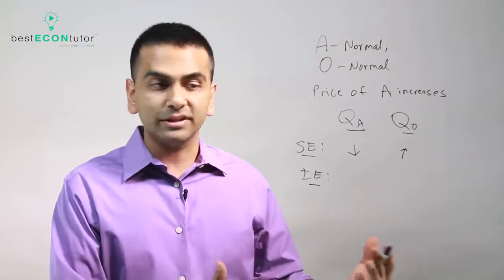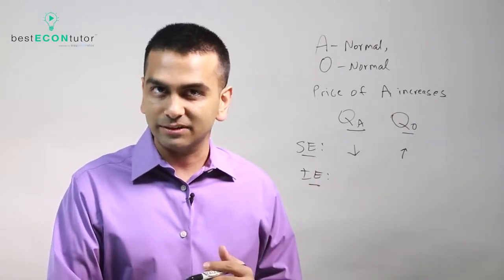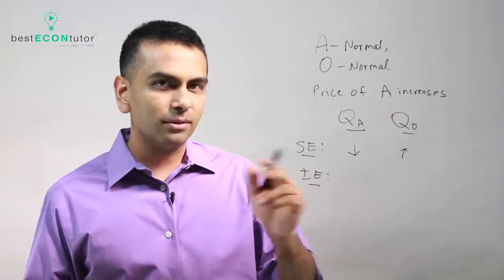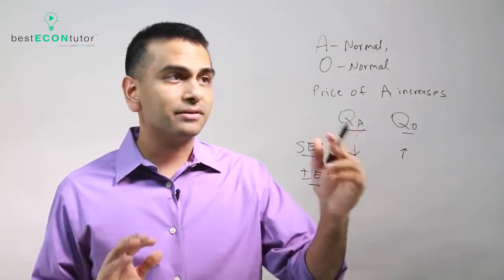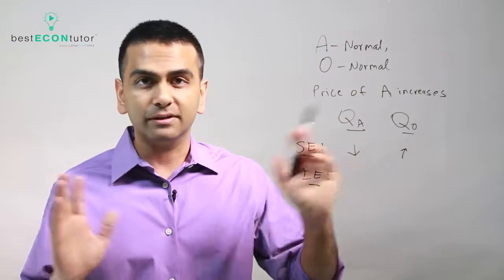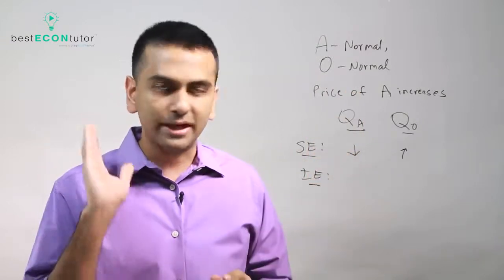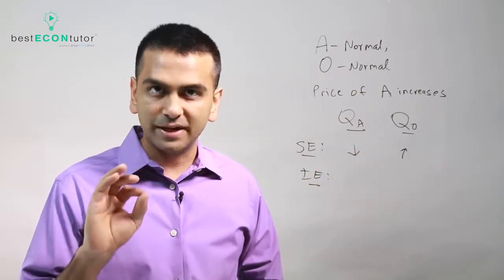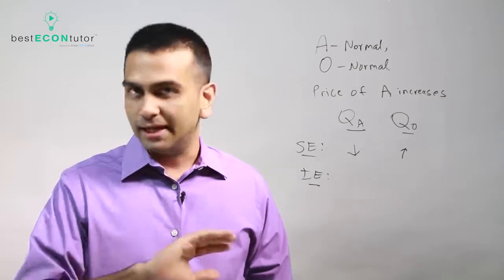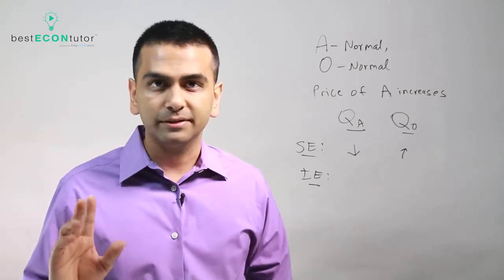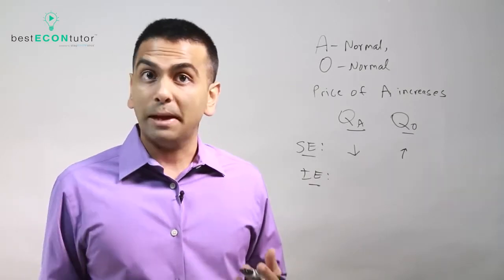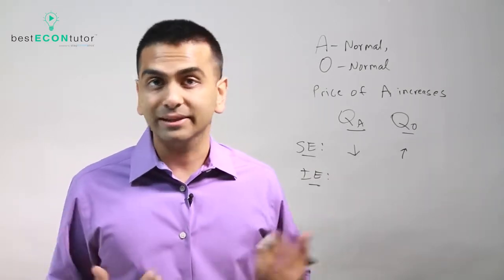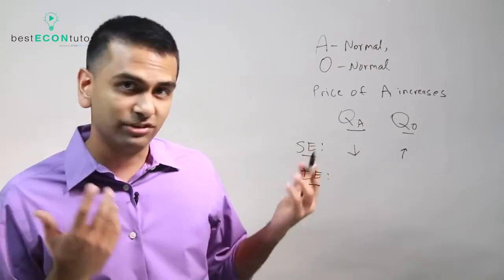Notice this doesn't mean that's what you're physically going to do, because we also have to take the income effect into account. One thing to notice: the substitution effect doesn't depend at all on whether goods are normal or inferior. To recap, the substitution effect says if any price goes up, normal or inferior, buy less of that good and more of the others. If a price goes down, buy more of the good whose price went down and less of the other goods.